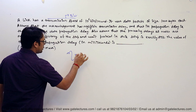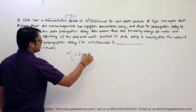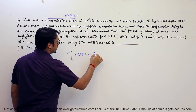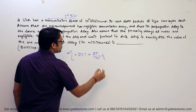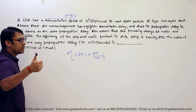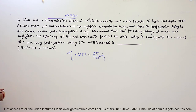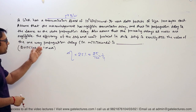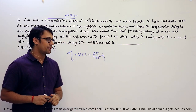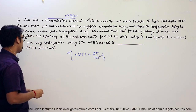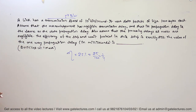Efficiency is already given as 25%, which is 25 divided by 100, equal to 1/4. So efficiency is 1/4. The question asks for the value of the one-way propagation delay in milliseconds — a very nice question. Let us solve this one.